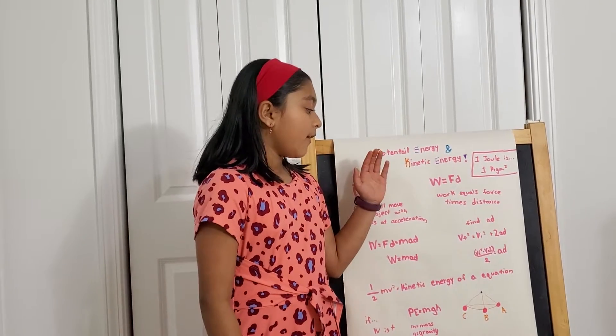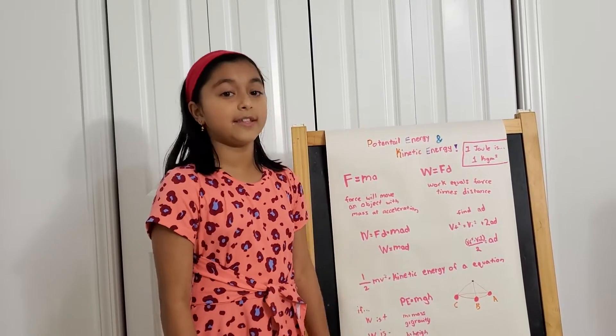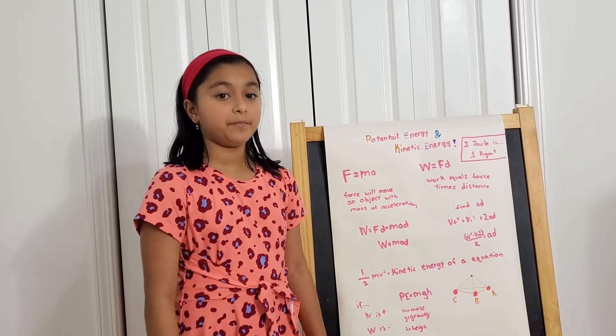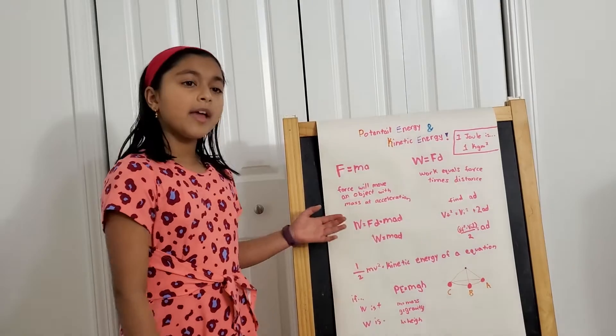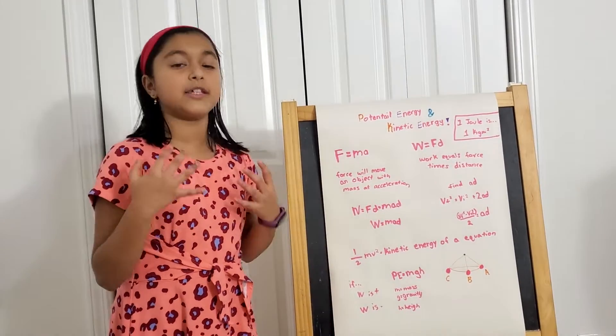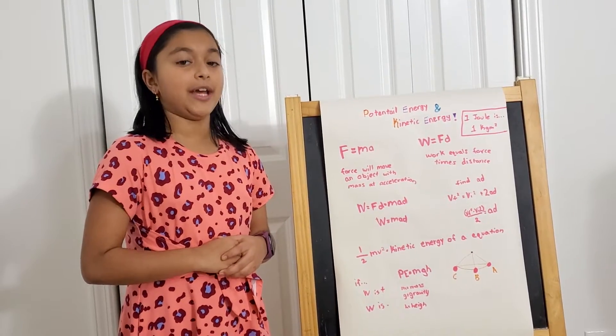So it becomes VF squared minus VI squared, because you bring the VI squared to the other side, divided by 2. That's what's equal to AD. And now, one half of mass velocity squared is equal to kinetic energy.